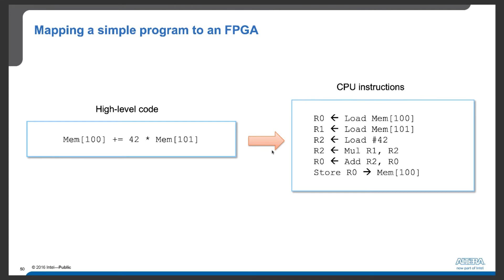If we convert this high-level language code into assembly language using CPU instructions, we'll have something like this. Assuming we have a few registers to store the intermediate values — R0, R1, and R2.